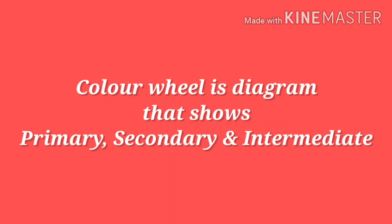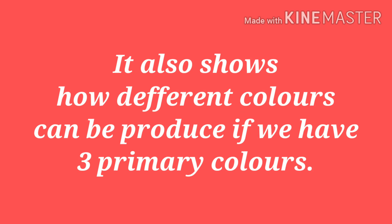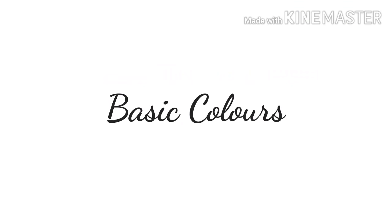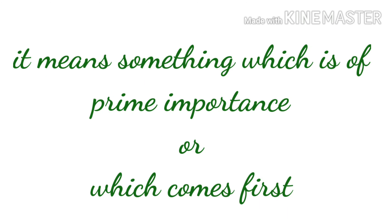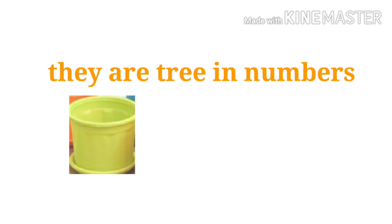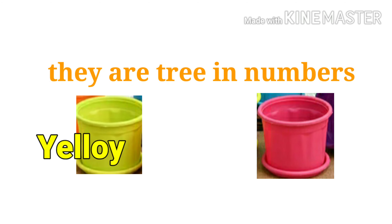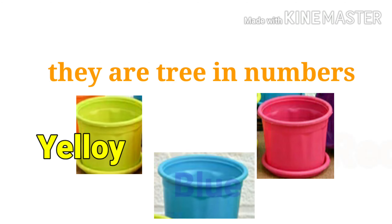It also shows how different colors can be produced if we have three primary colors. The word primary means basic. It means something which is of prime importance or which comes first. Yellow, red, and blue are primary colors.